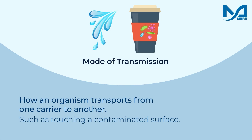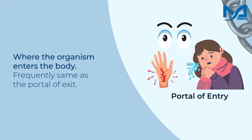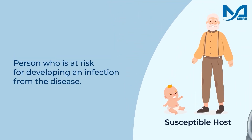The mode of transmission can be in the form of droplets, direct or indirect contact, or through airborne transmission. The fifth element in the chain of infection is the port of entry, or the place where the infectious agent enters another person's body. This is similar to the port of exit, so it can be the mouth, nose, eyes, or an open cut, etc.